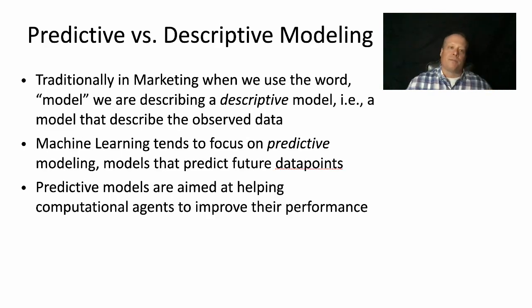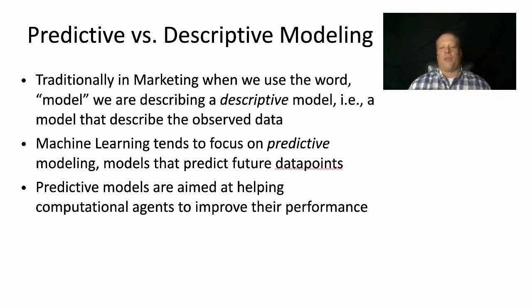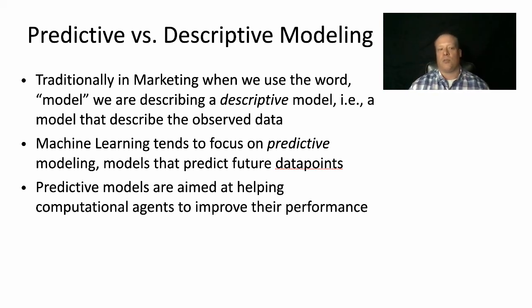Traditionally in marketing and business, when we use the word 'model,' we are describing a descriptive model — one that describes the observed data. But machine learning and artificial intelligence tend to focus on predictive modeling, i.e., models that predict future data points, not current ones. So when a computer scientist says 'model,' they typically mean a predictive model that tells us about the future, whereas a business researcher or analyst usually means a descriptive model of the current data set. Predictive models are aimed at helping computational agents improve their performance.